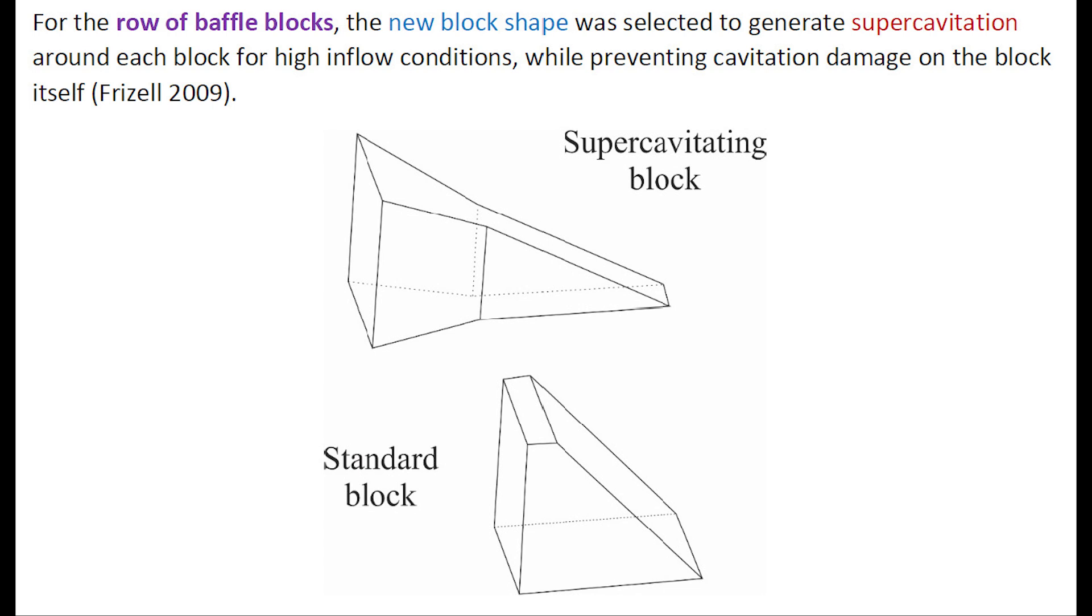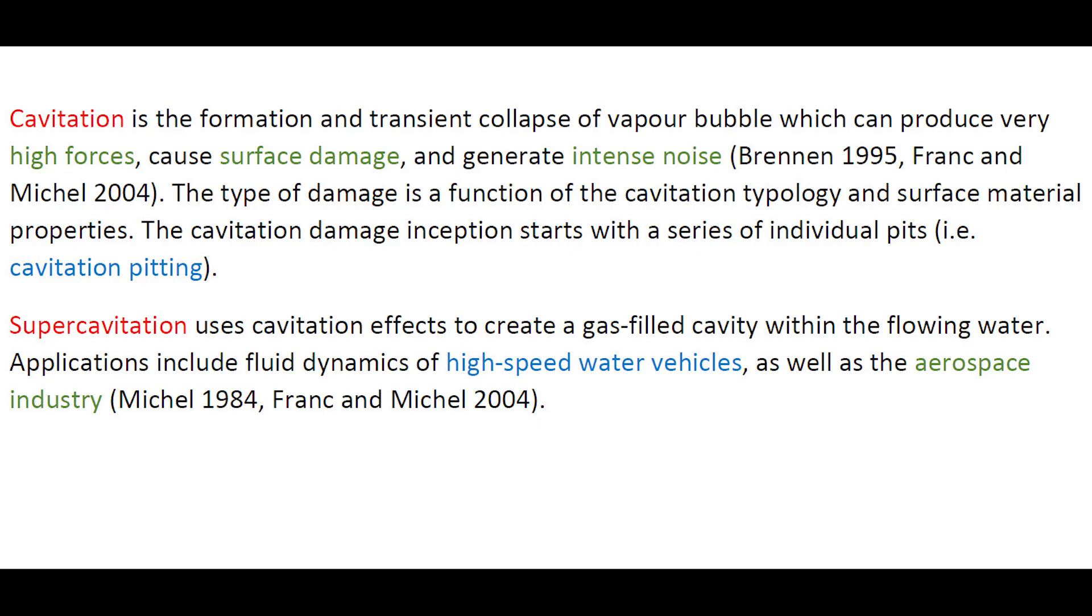For the row of baffle blocks, the new block shape was selected to generate supercavitation around each block for high inflow conditions, while preventing cavitation damage on the block itself. Cavitation is the formation and transient collapse of a vapor bubble that can produce very high forces, cause surface damage, and generate intense noise.